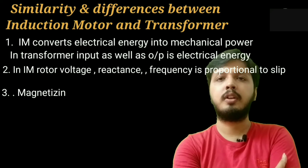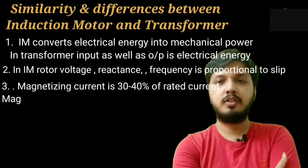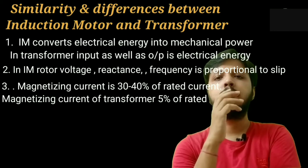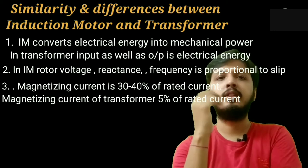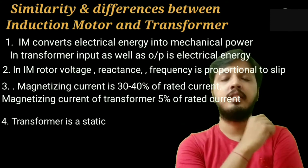Magnetizing current is 30 to 40 percent of rated current in case of induction motor. But in case of transformer, flux passes through the core material. So magnetizing current of transformer is less than 5 percent of the rated current. Transformer is a static device and induction motor is a rotating device.